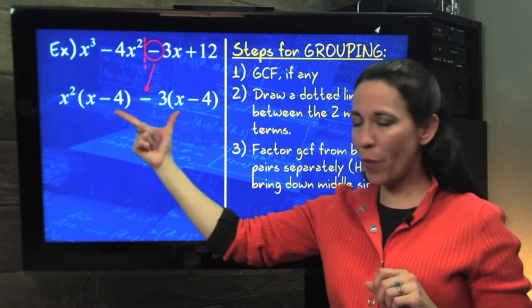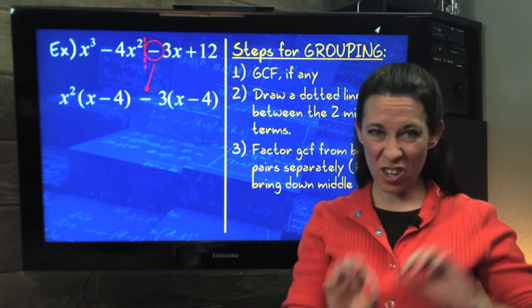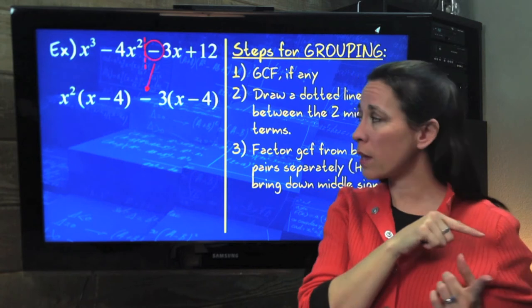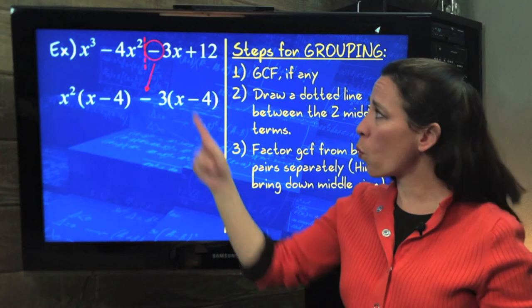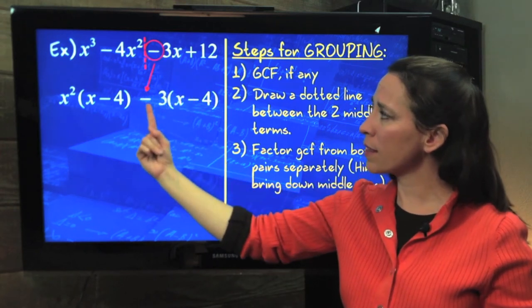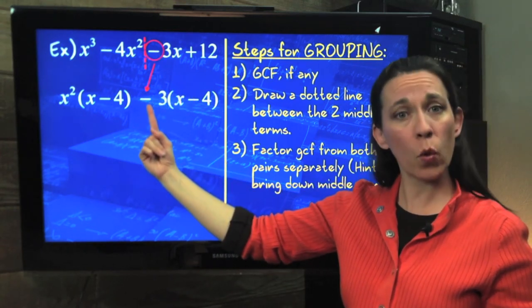Notice that both of these binomials are alike, so we're going to use the method we did on the previous page. If for some reason you get like an x + 4 here, check a couple of things. One, did you use the same sign there in the front, either a minus or a plus?